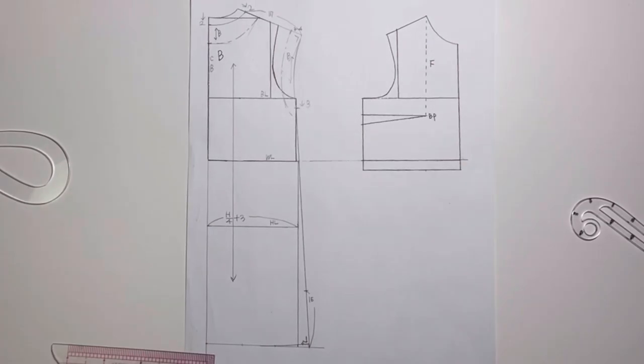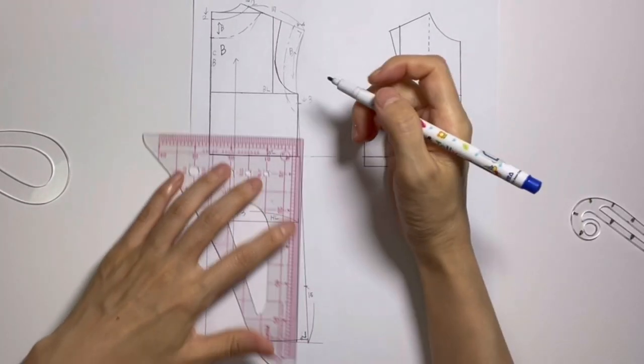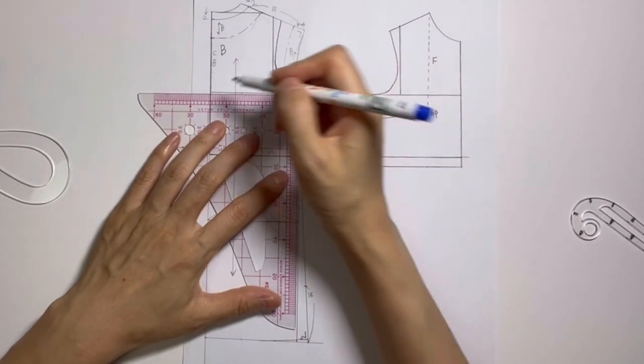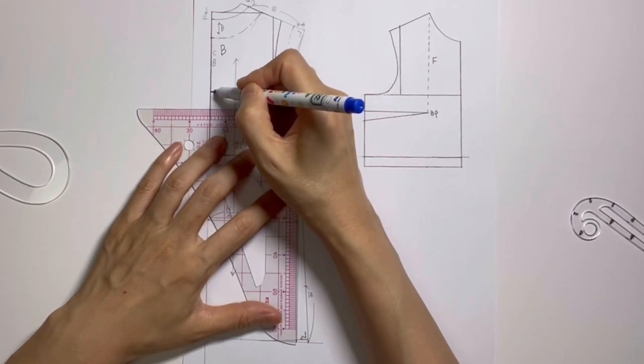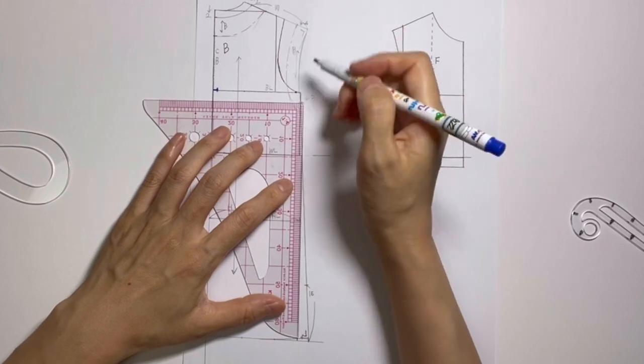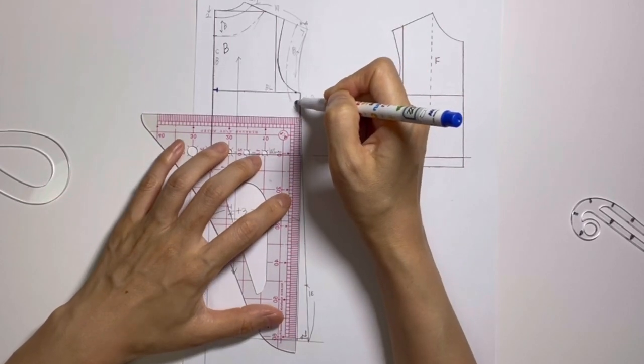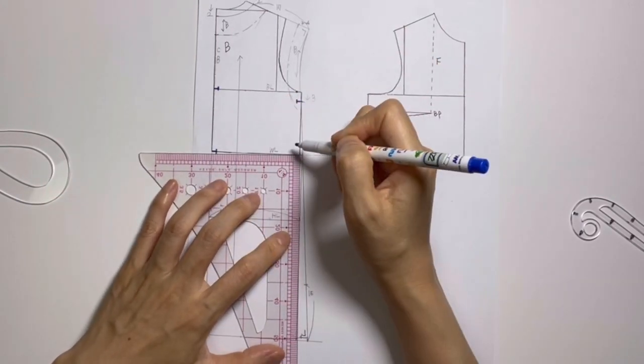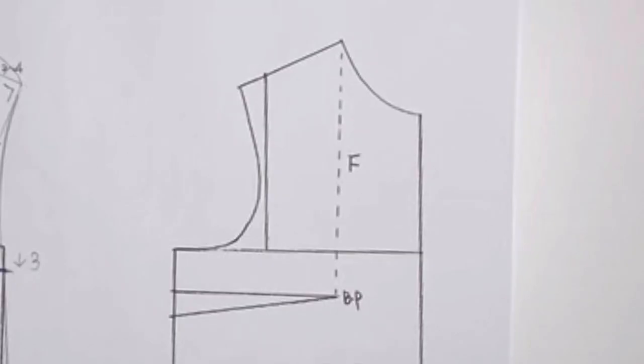Now add the notch markings. These are lines that help match the seams accurately when sewing. This is the sleeve line.